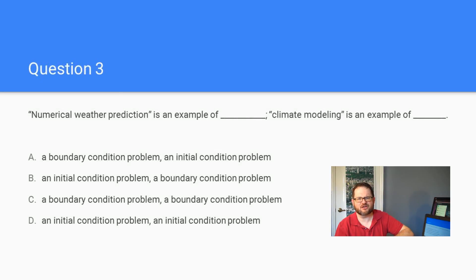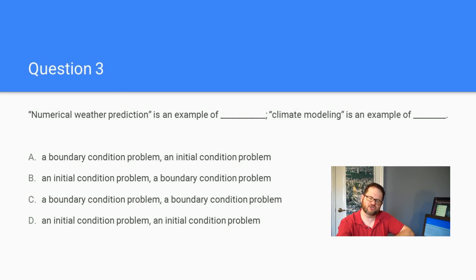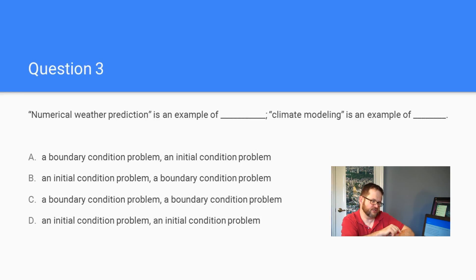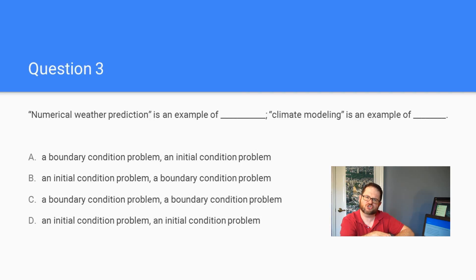All right, question three is talking about this business of initial condition problems and boundary condition problems. Basically you just have the four possible combinations down here as your choices, where you're saying numerical weather prediction is an example of, and climate modeling is an example of — which one is which? Make a choice from those four options and get a little feedback before you move on to question four.